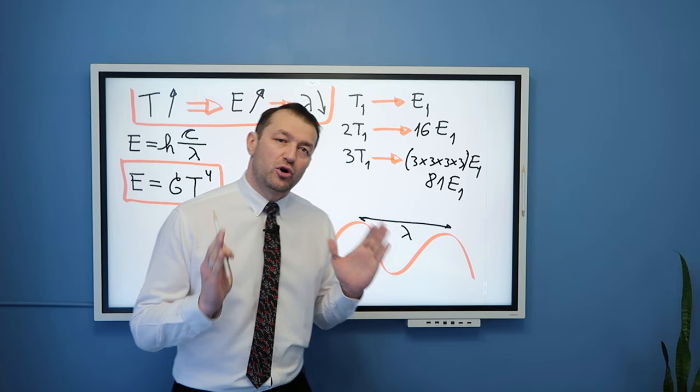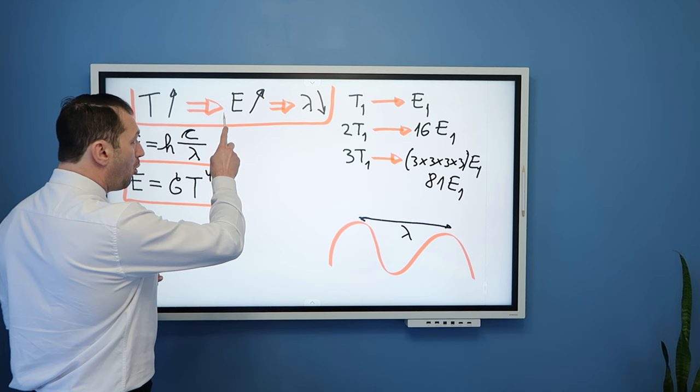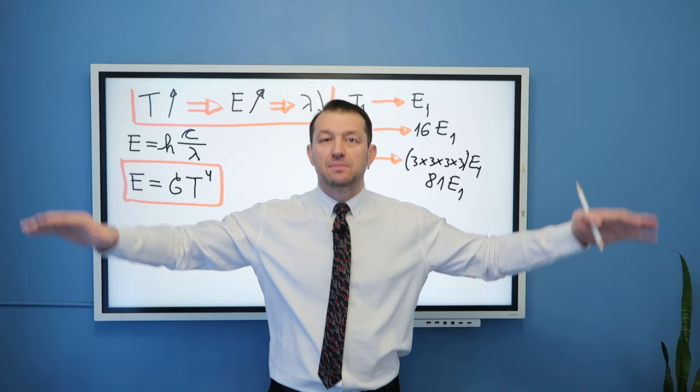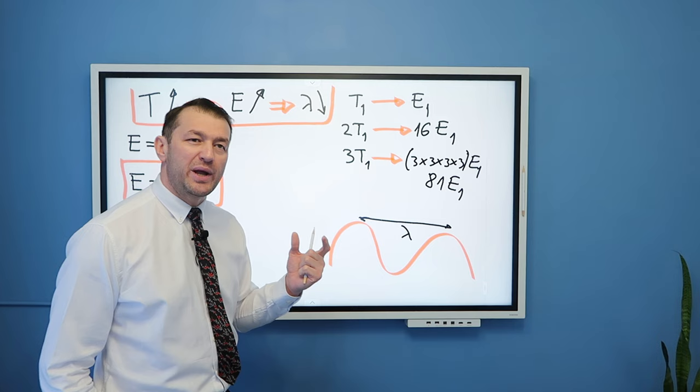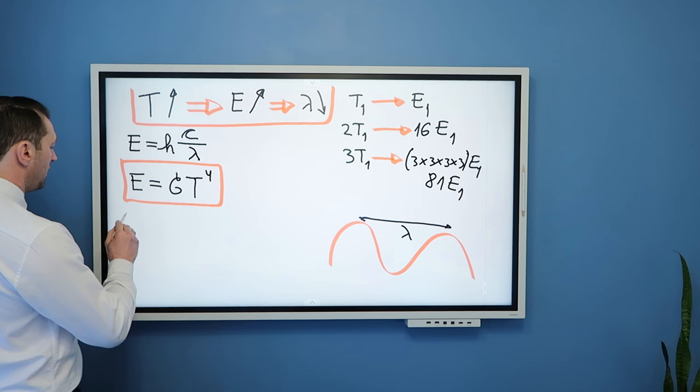Now it is very important to understand that it is not that all energy that an object is emitting is being emitted at a fixed value of a wavelength. Rather, energy is emitted across many different wavelengths. However, there is always a particular wavelength at which object emits most of its energy.